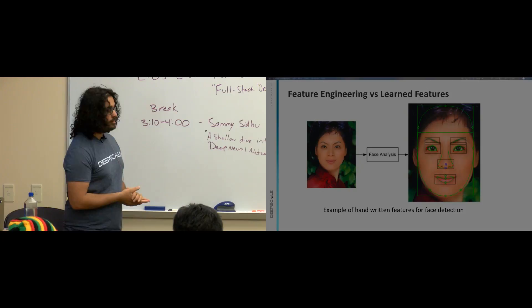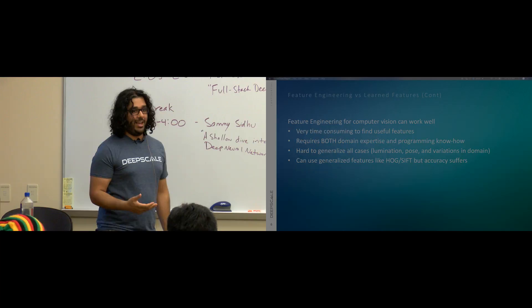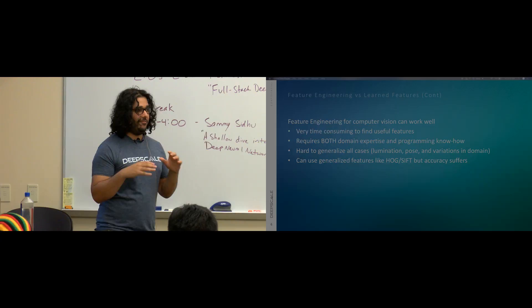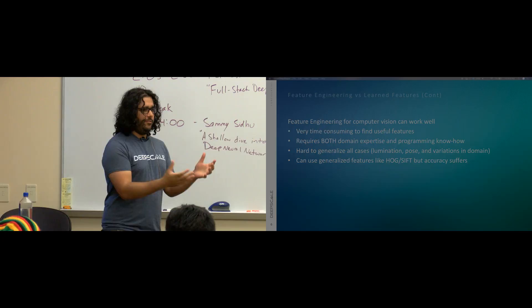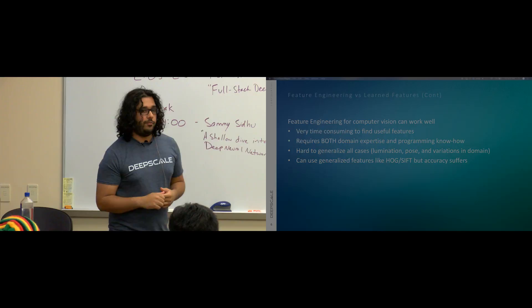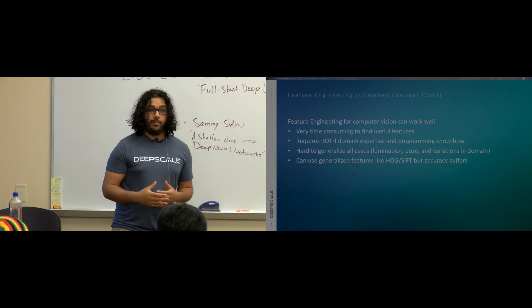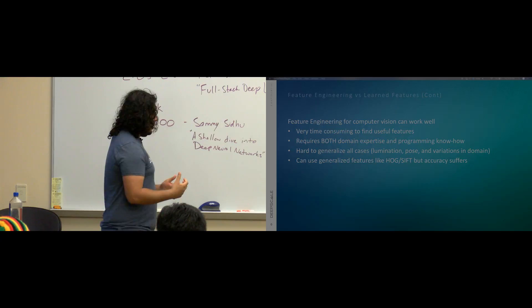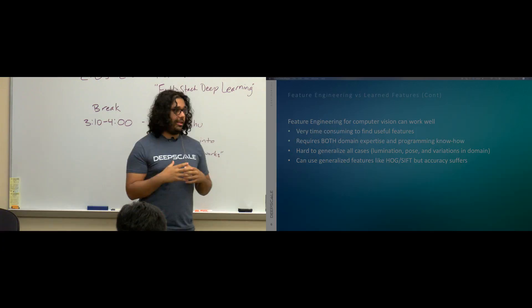This is very time consuming. Think about sitting down and learning everything about how eyes look — not just eyes, but eyes of all races, different lighting conditions. You need good programming skills, domain expertise, and to know everything about the specific object. It's hard to generalize — what if the person isn't looking straight at the camera, or the lighting is different, or you're indoors versus outdoors? It can be very brittle. Generalized features like HOG or SIFT exist, but they don't work as well as hand-coded features for your specific case.